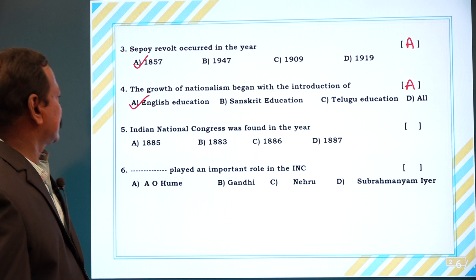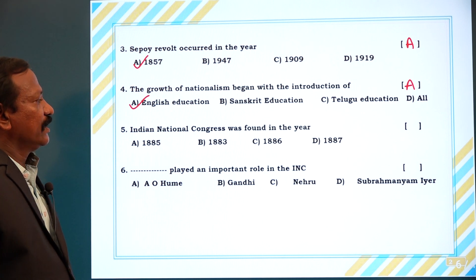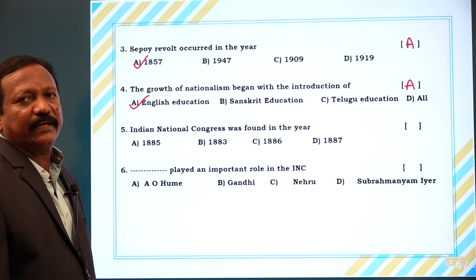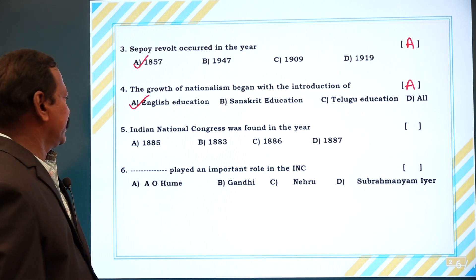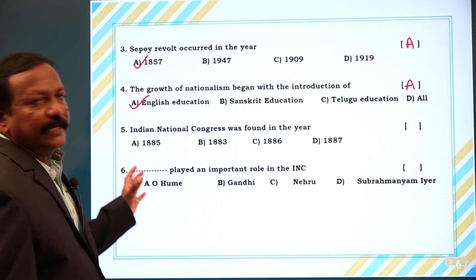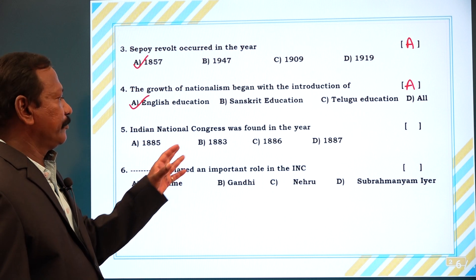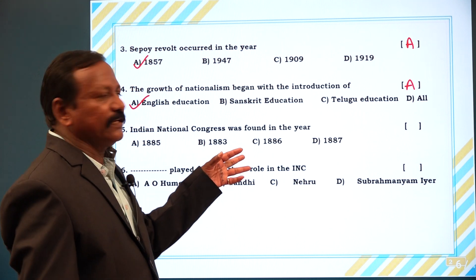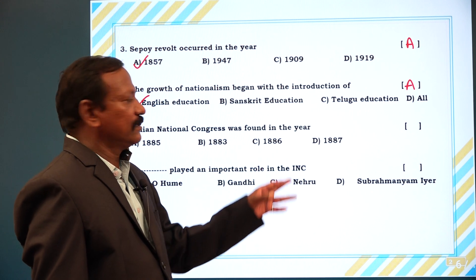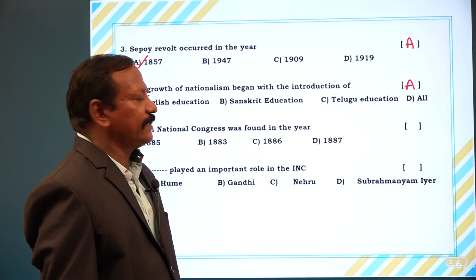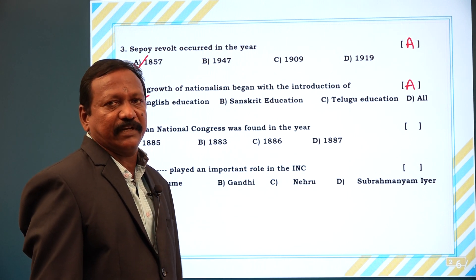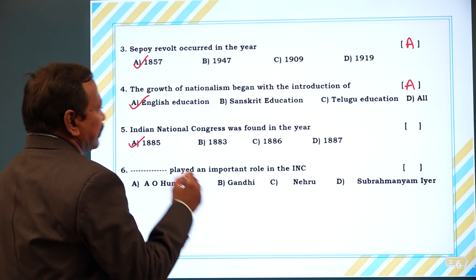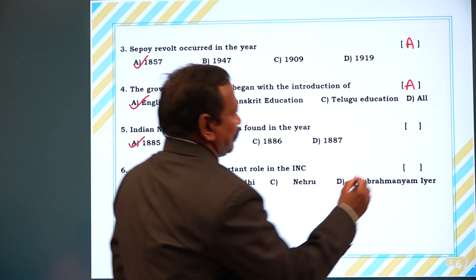Fifth question: Indian National Congress was founded in the year — A. 1885, B. 1883, C. 1886, D. 1887. Answer is A. 1885.